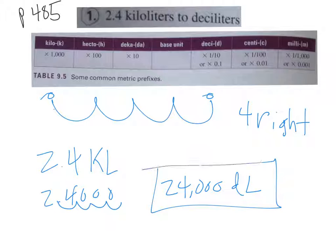So it's that easy. Figure out how many times and what direction you have to go to get from the units you have to the units you want, and then do the same thing with the decimal place.